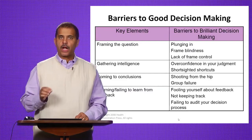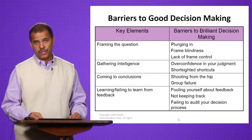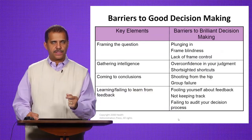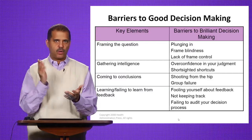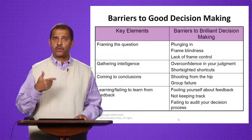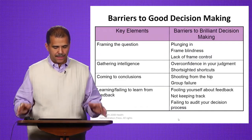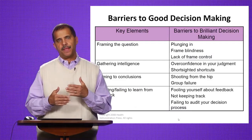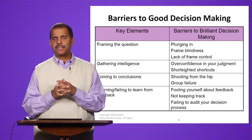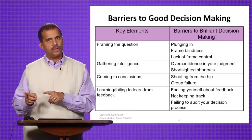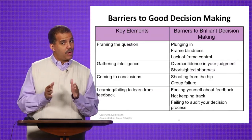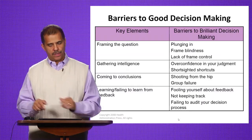The third barrier is jumping to conclusions prematurely. In this time-pressured world, we want to identify a problem, solve it, and move on quickly. Being time-sensitive and efficient is good, but you don't want to be efficient without being effective — don't prematurely jump to a solution when you don't really understand the problem. The fourth barrier is failing to learn from feedback. After going through the structured decision-making process, if you find the decision wasn't good, go back and analyze it. The only way to improve your decision-making is to critically examine what made it good or not, and determine what you can do differently in the future.